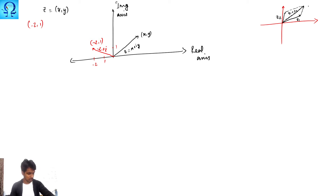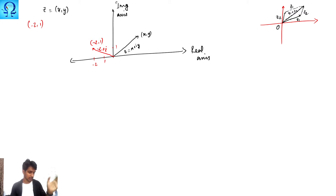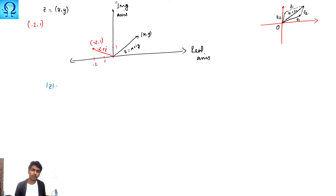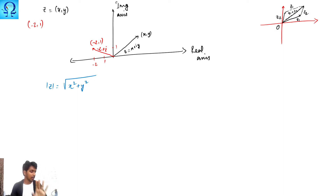The sum z1 + z2 is found by preserving the direction and length: place z2 at the tip of z1, and the resultant is z1 + z2. We have seen the addition of complex numbers as merely an operation, but it has geometric meaning as vector addition. The magnitude of this vector is given by √(x² + y²), and we take the positive square root.